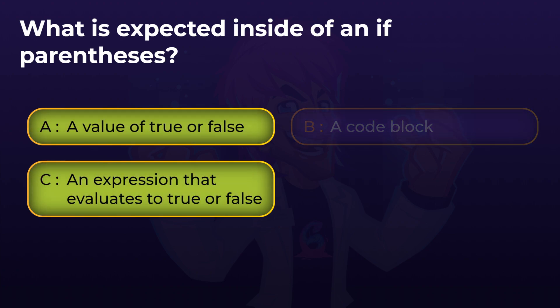The answer is both A and C. I always say the if statement expects an expression that evaluates to true or false, but you will notice we can also simply pass the literal values of true or false, because the literal value evaluates to true or false. A code block is the thing that comes after the parentheses — the curly braces — not the thing inside the parentheses.